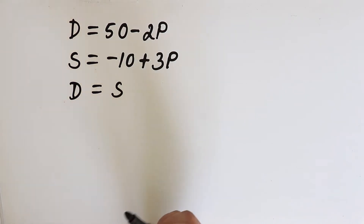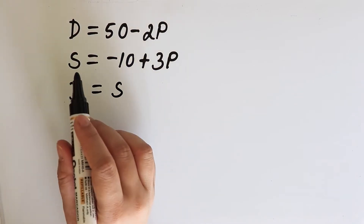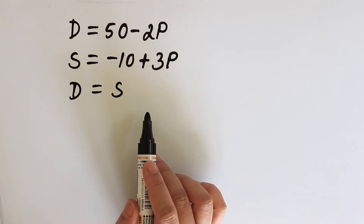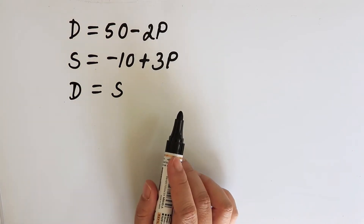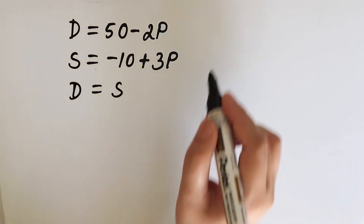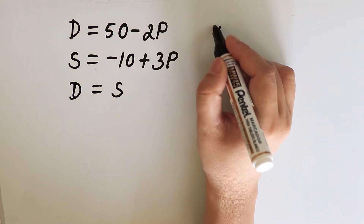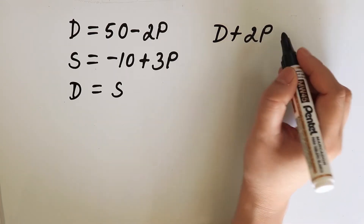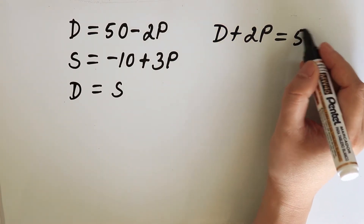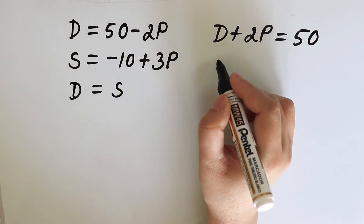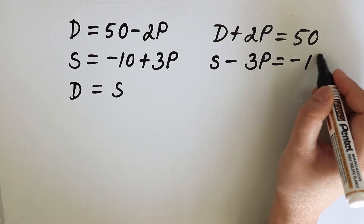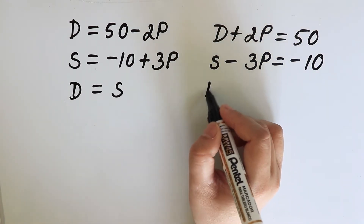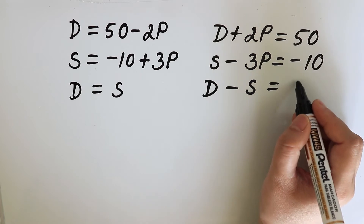In the matrix method, we first express the market model in matrix form. We will have to rewrite the equations by placing the variables on the left hand side and the constants on the right hand side. Thus, we can write: D plus 2P is equal to 50, S minus 3P is equal to minus 10, and D minus S is equal to 0.